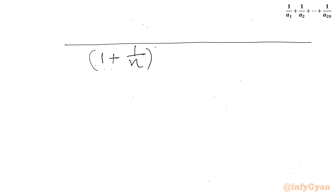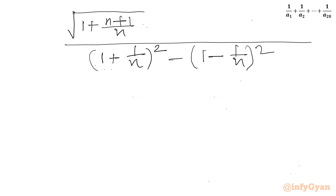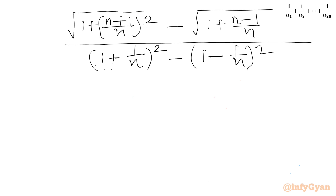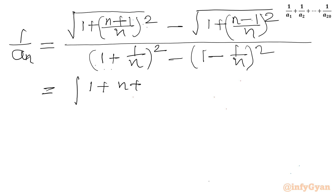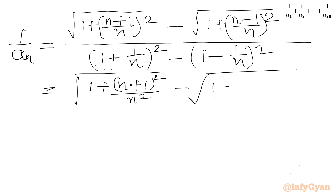So I can write the numerator as √(1 + ((n+1)/n)²) minus √(1 + ((n−1)/n)²), and the denominator becomes (1 + 1/n)² minus (1 − 1/n)². Taking LCM, the numerator terms become √((n²+n+1)²/n²) minus √((n²+n−1)²/n²).